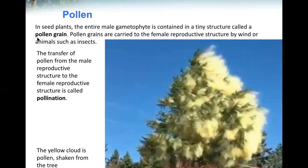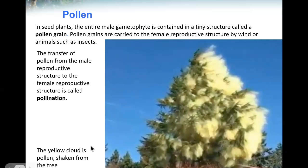In seed plants, the entire male gametophyte is contained in a tiny structure called a pollen grain. Pollen grains are carried to the female reproductive structure by wind or animals, such as insects. The transfer of pollen from the male reproductive structure to the female reproductive structure is called pollination. The yellow cloud shown is pollen shaken from a tree.